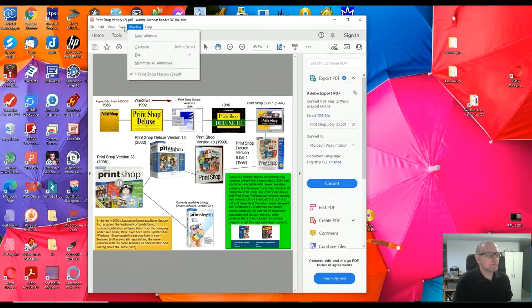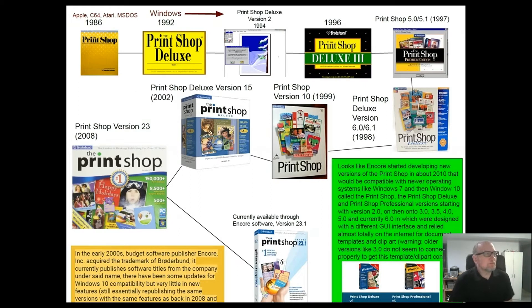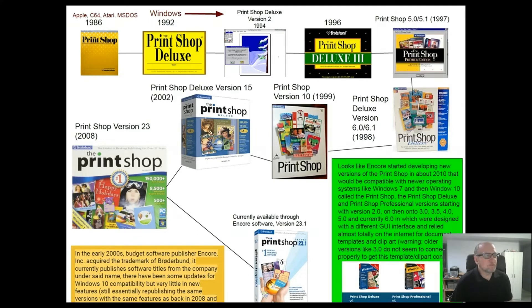Basically, Print Shop was released back in 1986, maybe a little bit before, on the Apple, the Commodore 64, Atari, and there was an MS-DOS version as well — it came out in the mid-80s. It came from the very first version that was developed for Apple. Then in 1992, the Print Shop Deluxe version came out, and it was basically the first one that supported the earliest versions of Windows, like Windows 3.0 and 3.1.